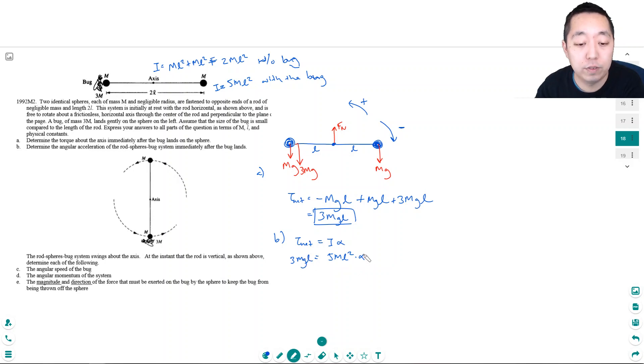I can solve for alpha. The m's cancel, one of the l's cancel, so I get alpha by dividing by 5l. So three-fifths mg over l—that would be the angular acceleration.